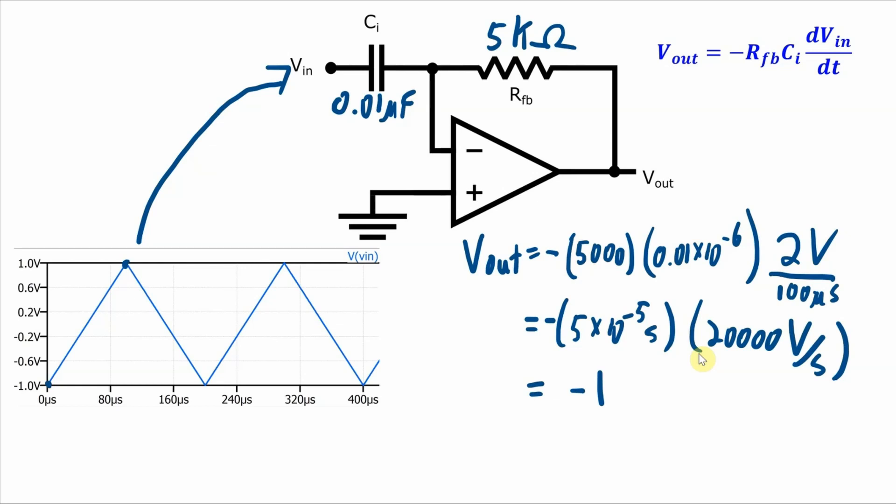The calculation for the falling part of the triangle or the decreasing part of the triangle is going to be the exact same. The R and the C values are the same. The only difference is that since it's going from one volt down to minus one volt, this value right there becomes a negative value. So you have a negative number times a negative number. Vout for that time period will be plus one volt.